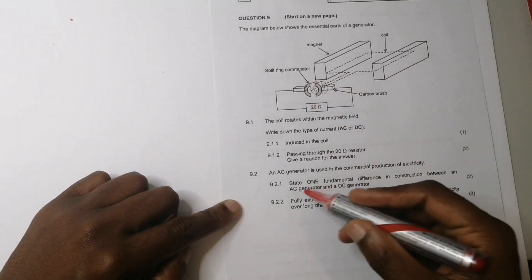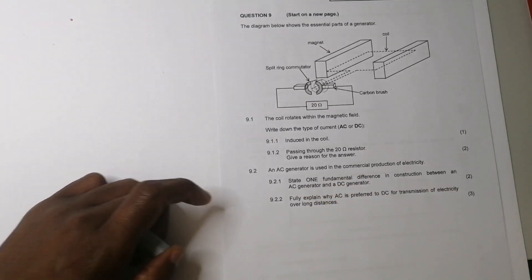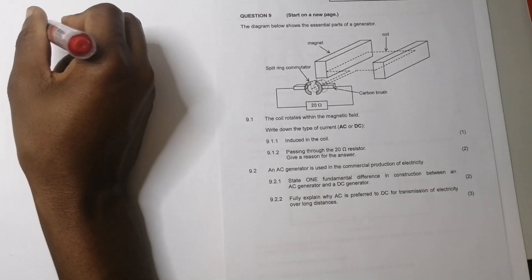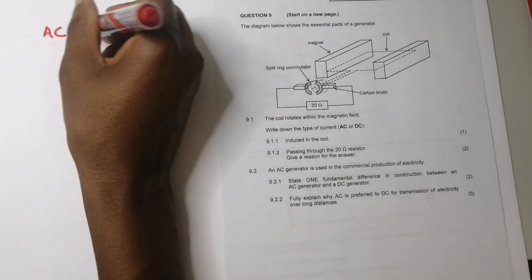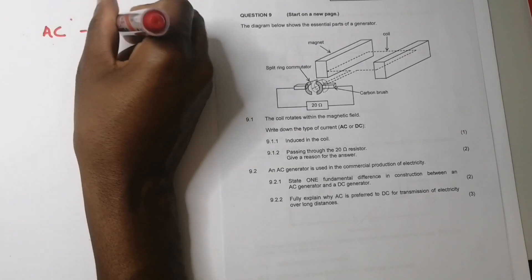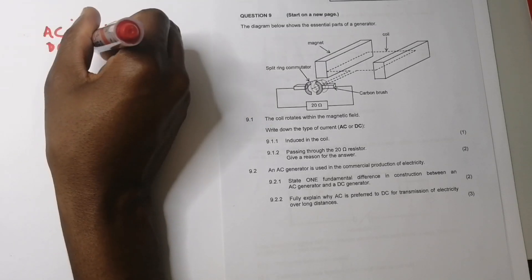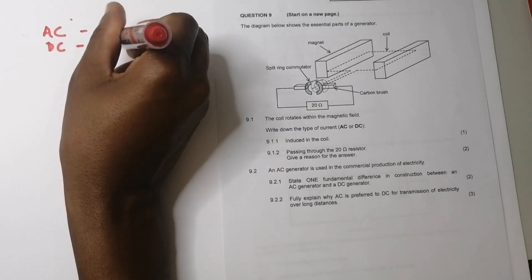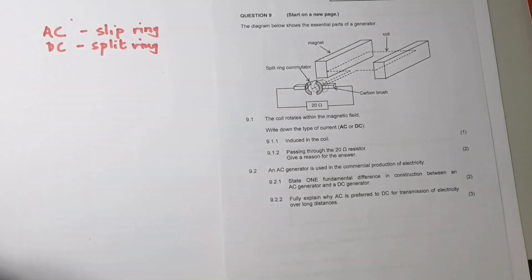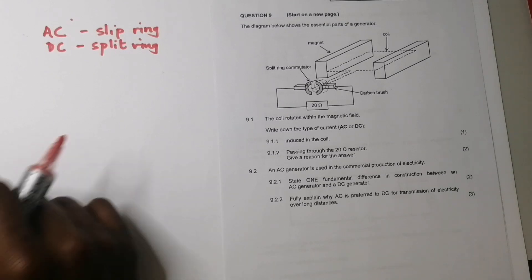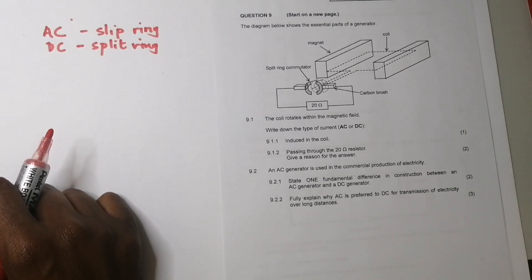And obviously because we've got those split ring commutators. So they say an AC generator is used in the commercial production of electricity. And by the way, that's a fact. Eskom does use AC generators. The kind of electricity that we use in our homes is AC. But now they say to us, state one fundamental difference in construction between the AC generator and the DC generator.